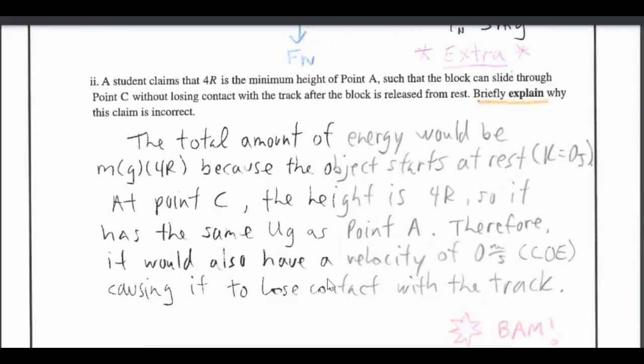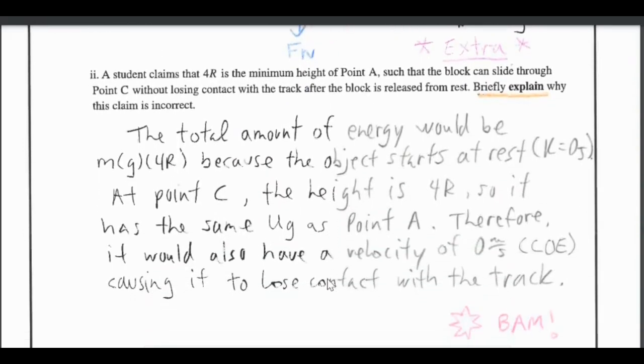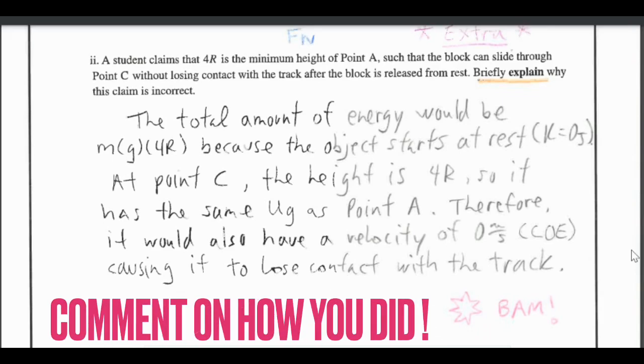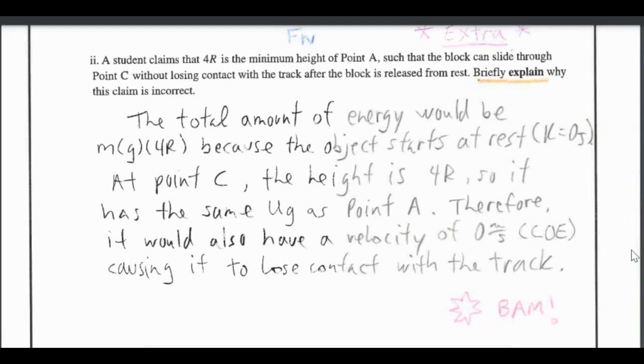For our final one, it says a student claims that 4R is minimum height of point A such that the block can slide down through point C without losing contact with the track after the block is released from rest. Briefly explain why this claim is correct. So you want to make sure you pay attention to the key words. I don't particularly like explaining, I'd rather just write out some formulas and show it that way but they're asking me to explain so I'm going to use my words the best I can.